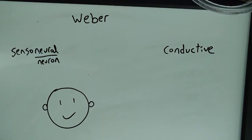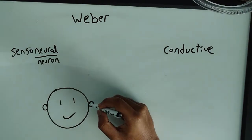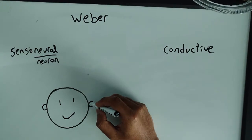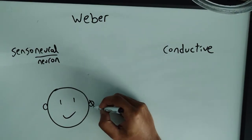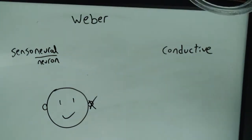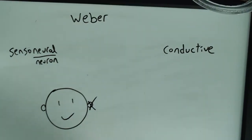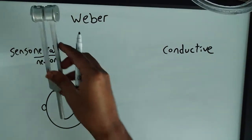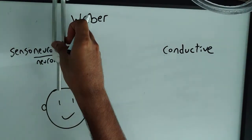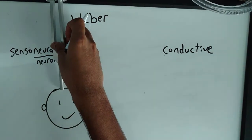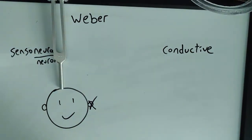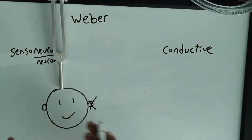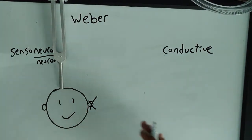So for the Weber test, you activate the tuning fork, put it right on top of their head, and you ask the patient which side they hear the sound or feel it. A normal person would feel it equally on the left ear and the right ear.